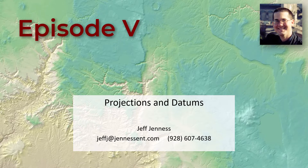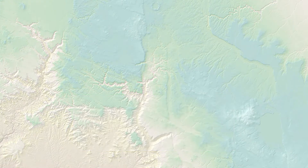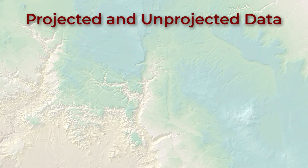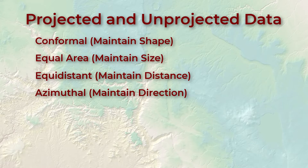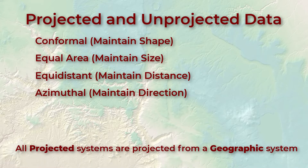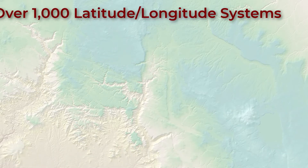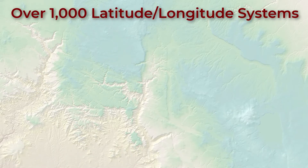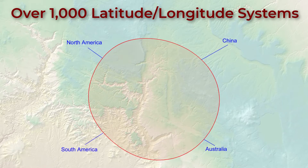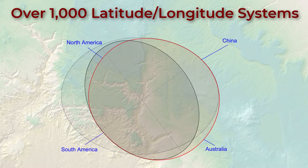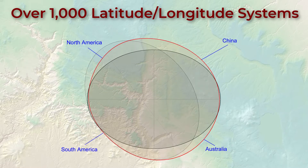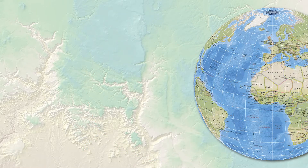Hello everybody and welcome to our last video on projections and datums. So far we've learned about projected and unprojected data, talked about reasons and strategies to take when projecting data, and the fact that all projected coordinate systems are projected from some underlying geographic coordinate system. We learned that there are over a thousand geographic coordinate systems recognized by ArcGIS, all of which position the spheroid in a different place relative to our little blue marble that we call home, and most, but not all of which, place the zero longitude point at Greenwich, England.